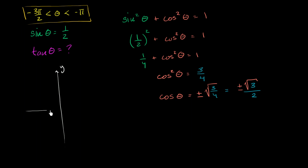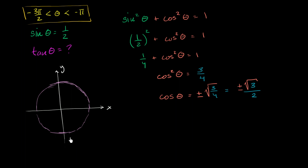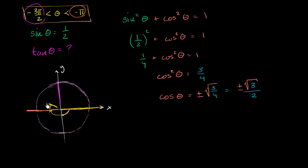Here's the y-axis, the x-axis, and I'll draw the unit circle. Now, theta is greater than negative 3 pi over 2. One side of the angle is along the positive x-axis. Negative pi over 2 is here, negative pi is here. So theta is between negative pi and negative 3 pi over 2, which is right over here — placing our angle somewhere in this region.